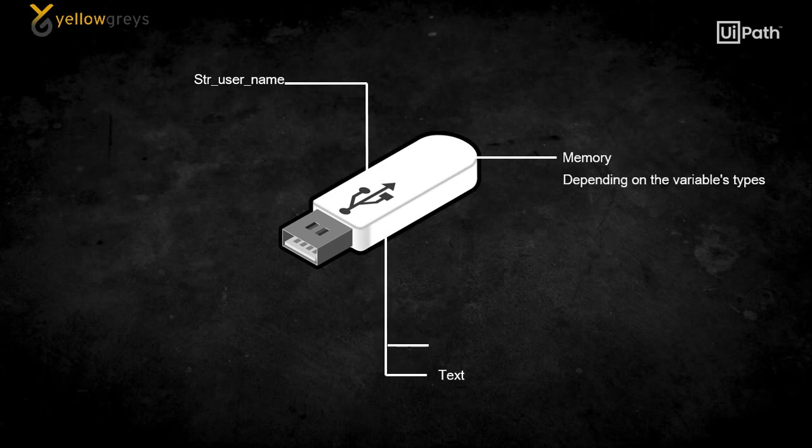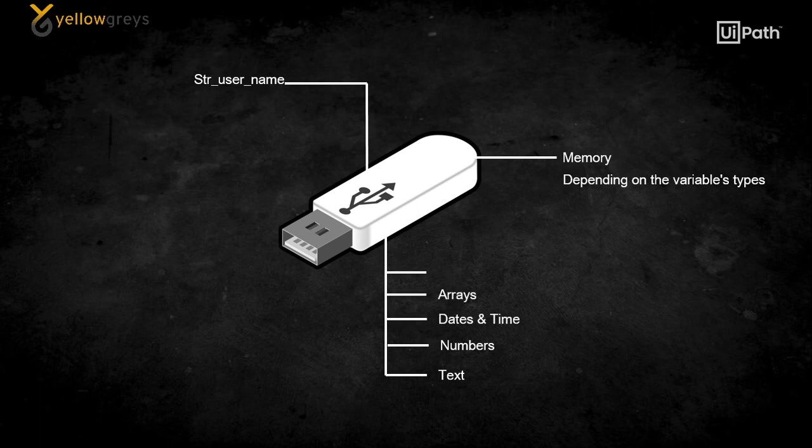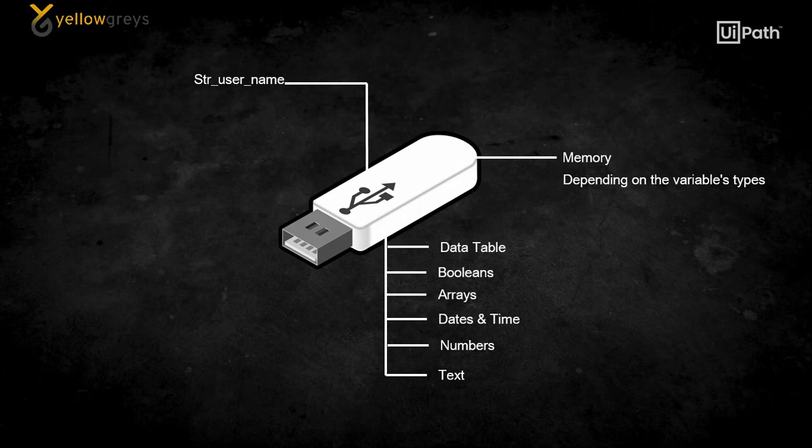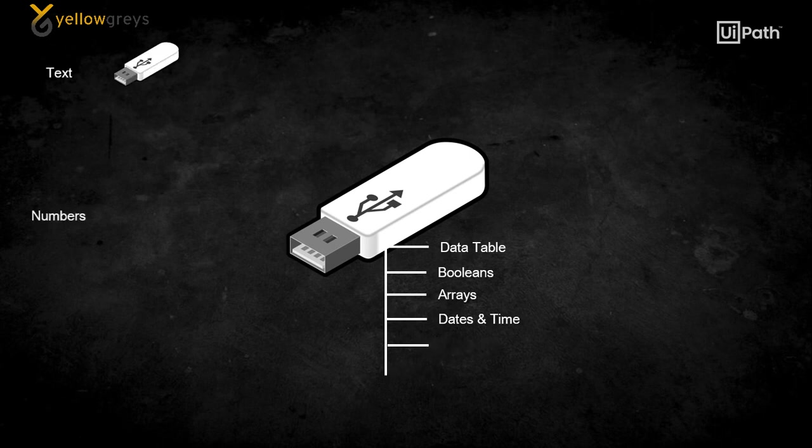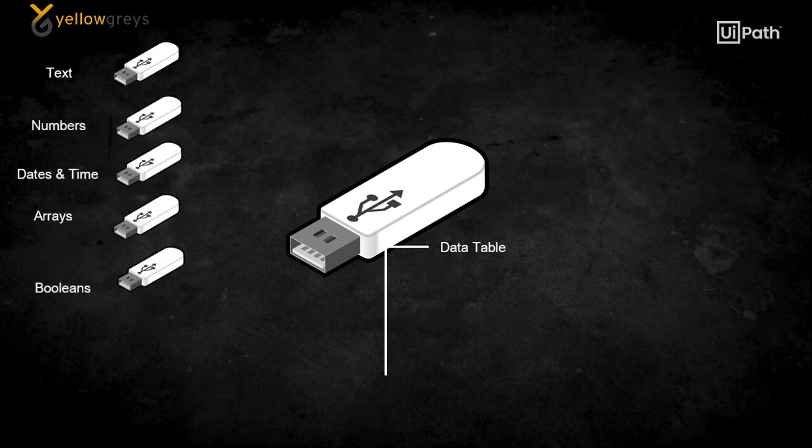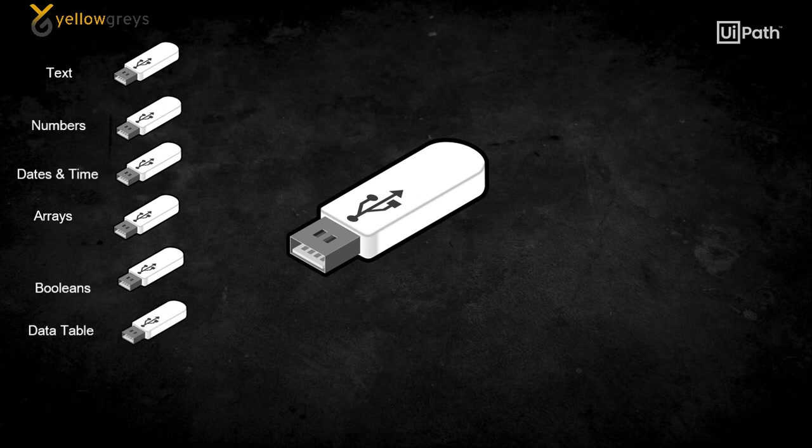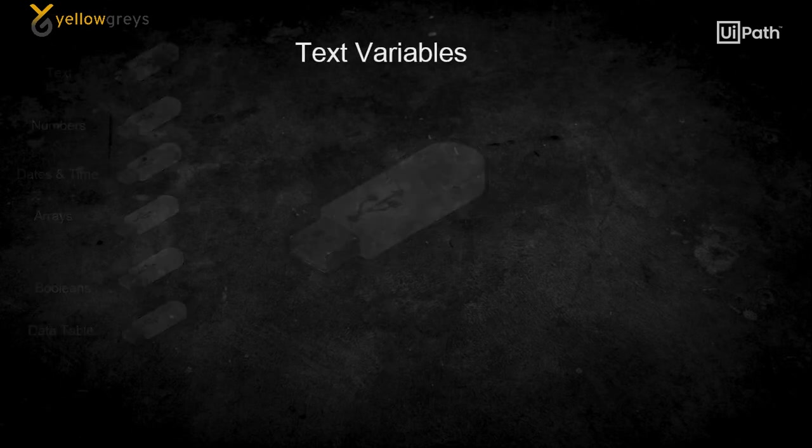And we can store a variety of data kinds including text, numbers, date and times, array, boolean, data table, and generic data. The only difference is we need to allocate separate memory for all the variables. Let's take a closer look at the various types of variables.